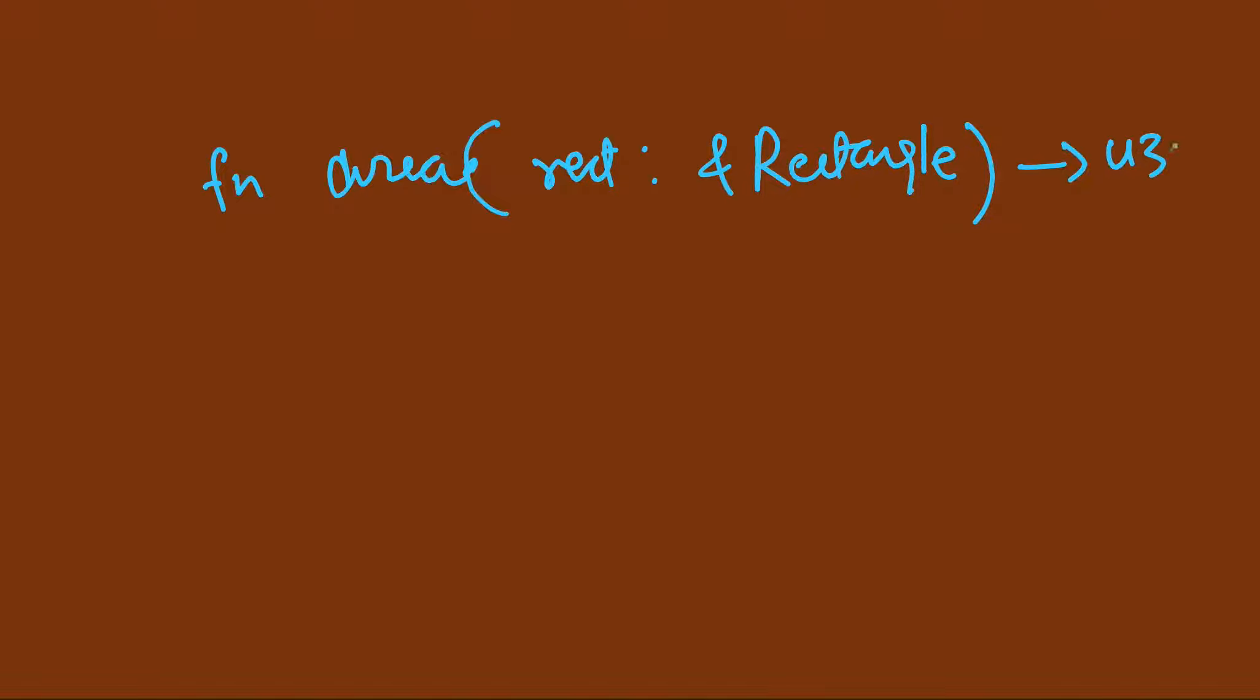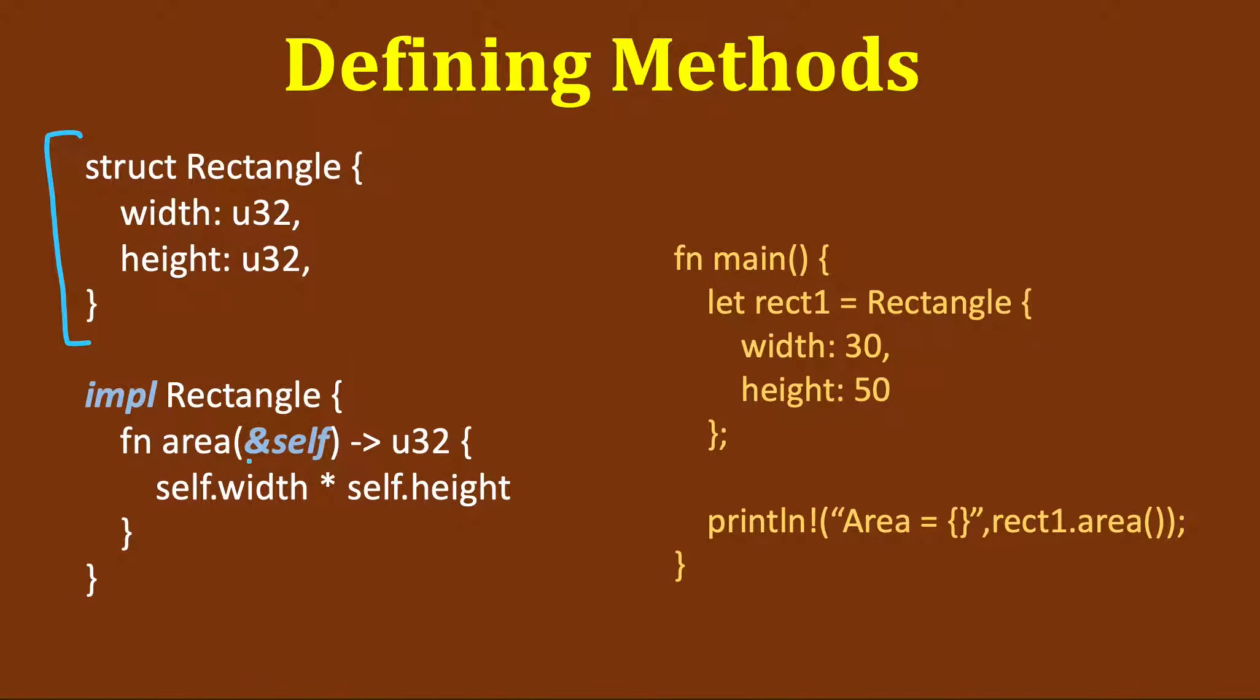It was returning the area and we were doing the computation. So here instead of this ampersand rectangle, it's replaced by ampersand self.